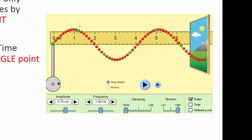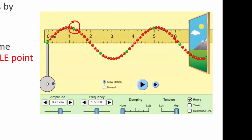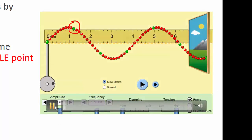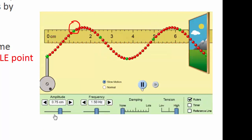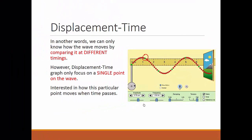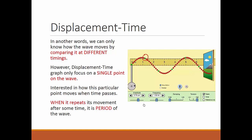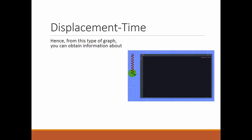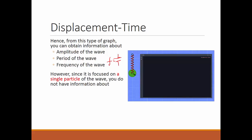The displacement-time graph only focuses on a single point on the wave. You only look at, say, this particular green dot, and you see how it actually moves — it goes down and up. There will be a certain timing at which it repeats itself. When it repeats its movement after some time, that is the period of the wave. From this graph, you can obtain information about the amplitude and the period of the wave. Since you know the period, you also know the frequency, as frequency is just 1 over period. However, since it focuses on a single particle, you do not have information about the wavelength.